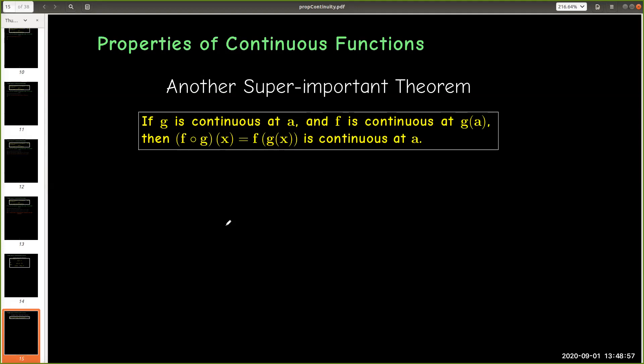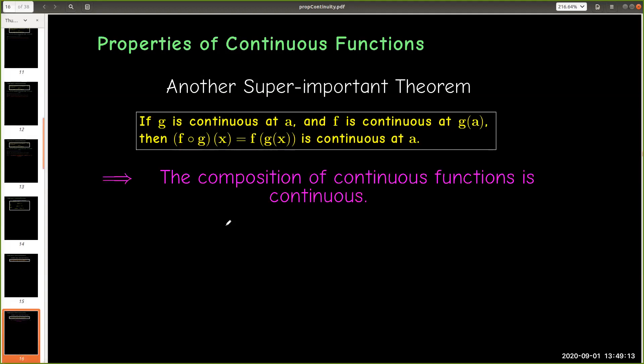Another important theorem is that if g is continuous at a and f is continuous at g of a, then the composition f of g of x is continuous at a. So essentially, now we've learned that no matter how we combine two continuous functions, either using arithmetic or by using composition, the result is a continuous function.